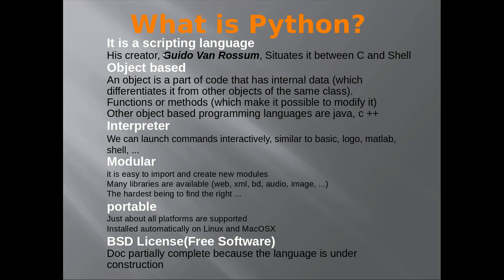Python is object-based. An object is a part of code that has internal data which differentiates it from other objects of the same class. It has functions or methods which make it possible to modify it.